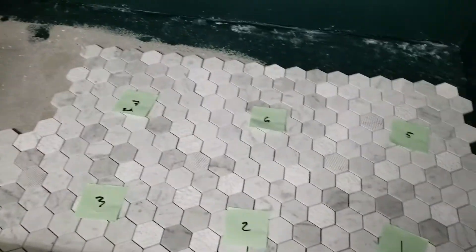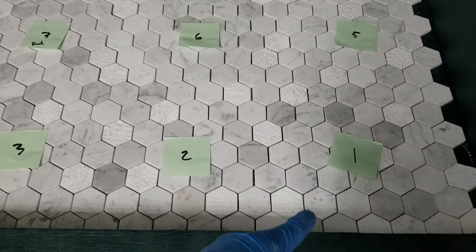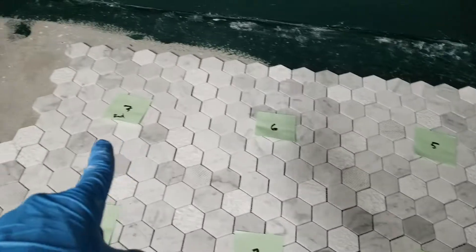All right, so I dry laid out the tile and I numbered it by how I need to go down with it. So obviously one, two, three, four, and I'm going to continue on and then do the top stretch there.